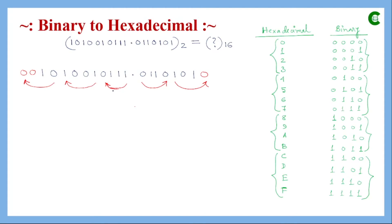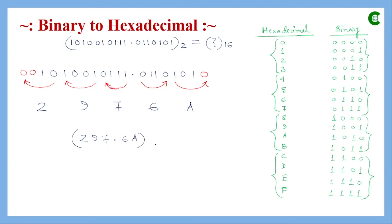Now we find the hexadecimal equivalent of each group: 0111 is 7, 1001 is 9, 0010 is 2 for the integer part. For the fractional part, 0110 is 6, and 1010 is A. So the equivalent hexadecimal number is 297.6A.